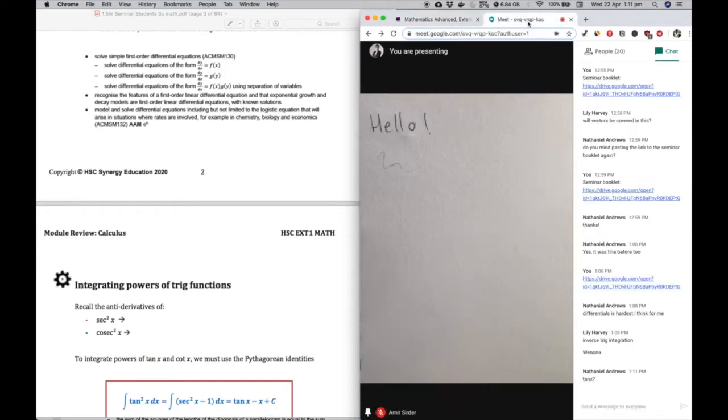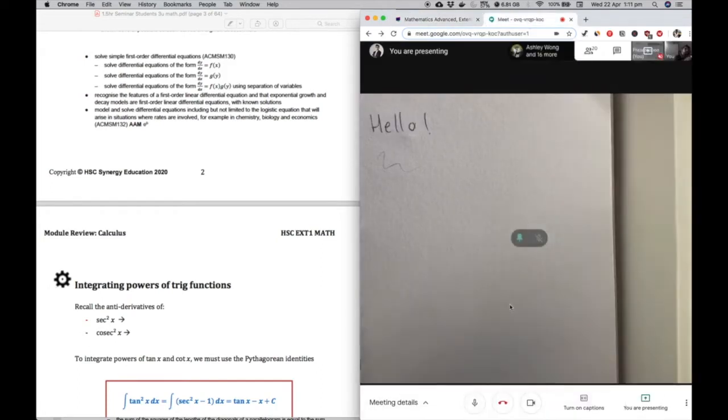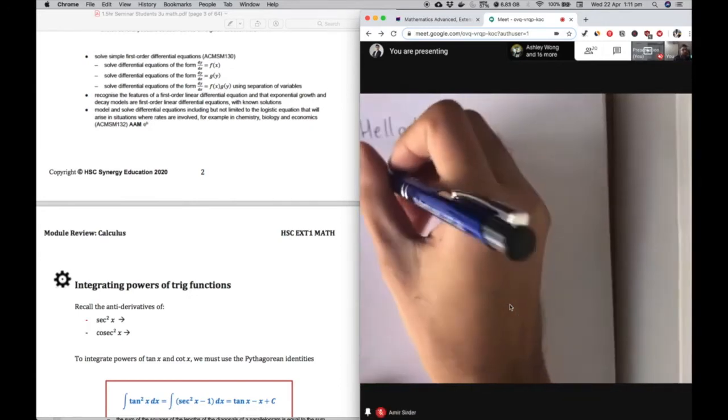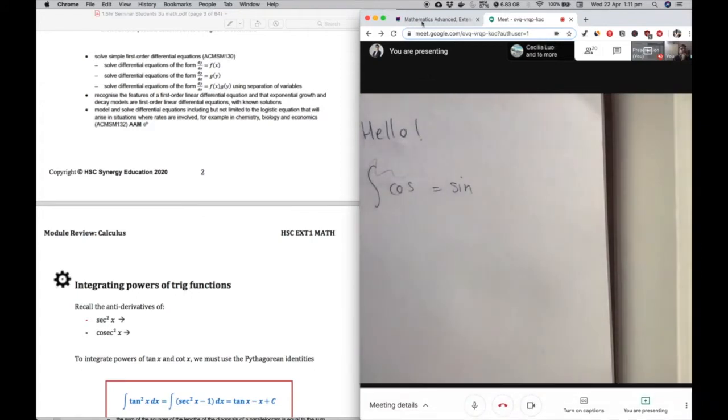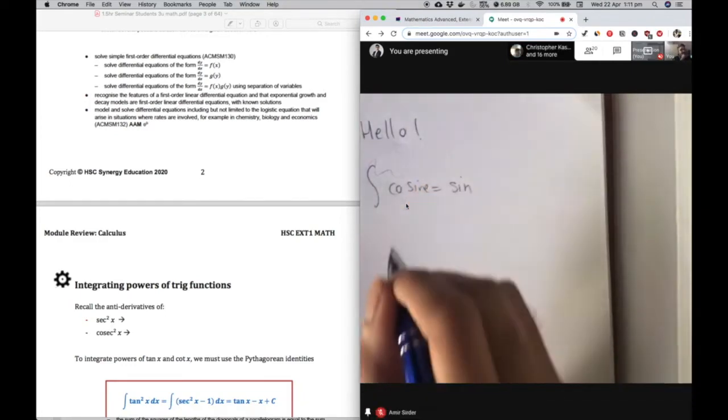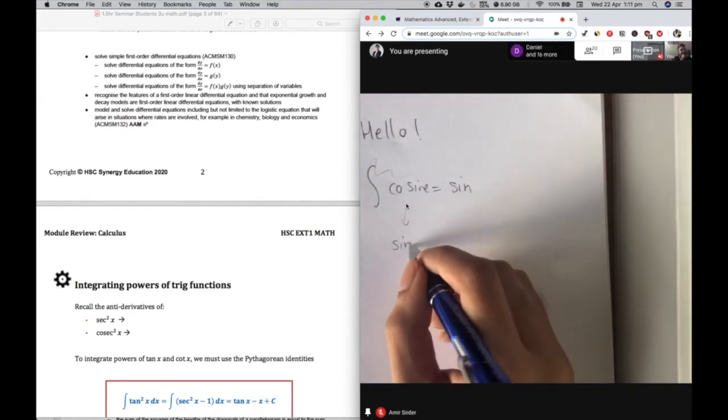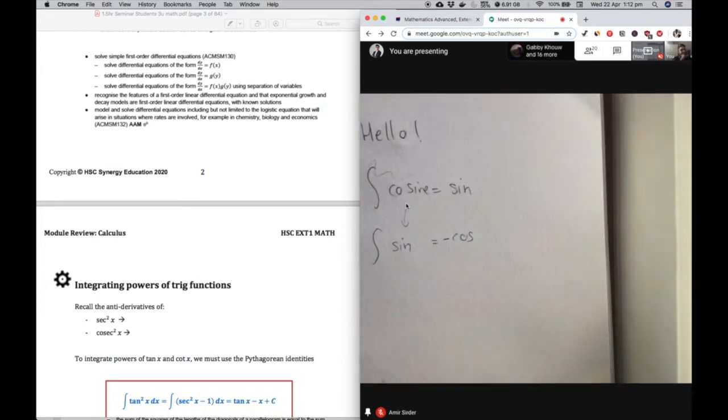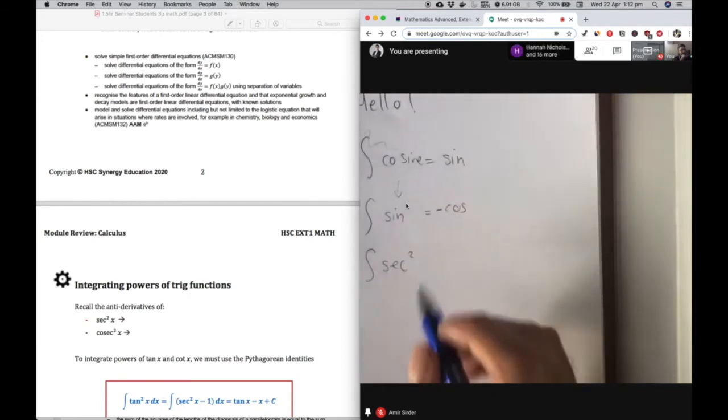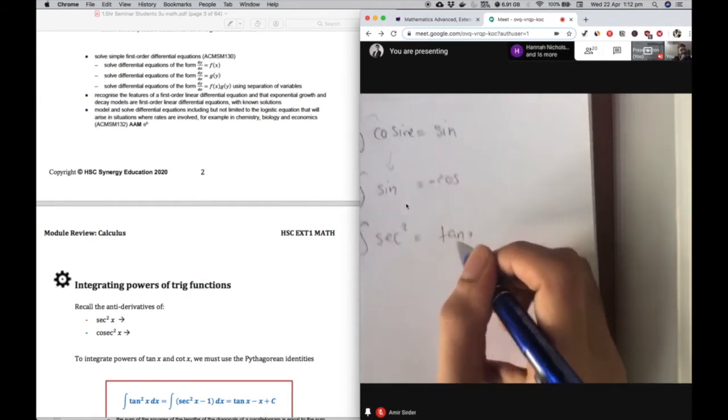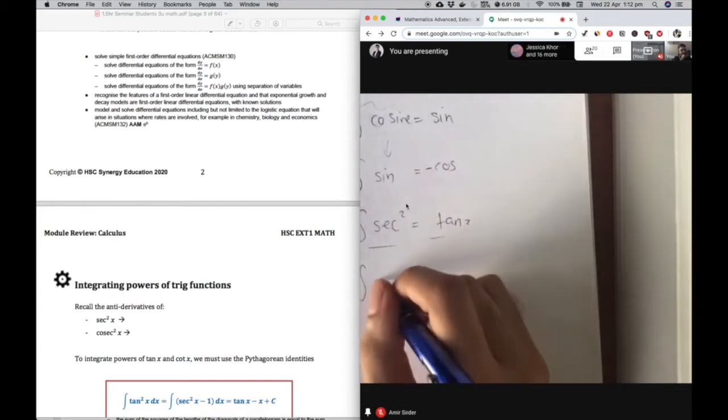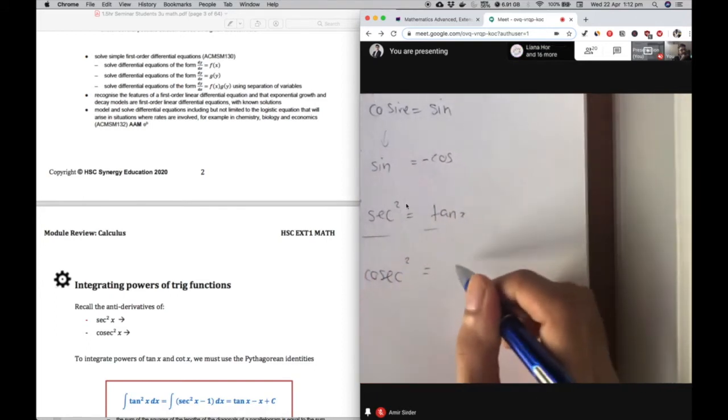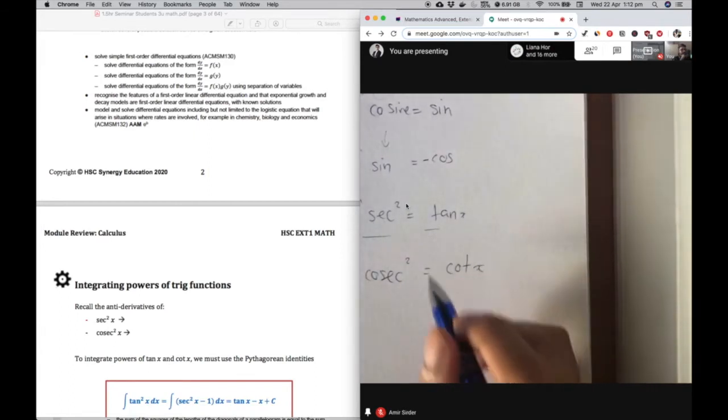So what I mean by that is, if you think about the integral of cos, it's equal to sine, right? So now, if we complement these things, cos is short for cosine. If we complement this, we end up with sine. And the complement of sine is actually cos. And then all you have to do is put a minus sign.